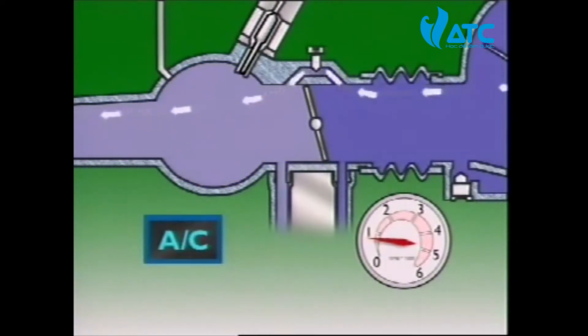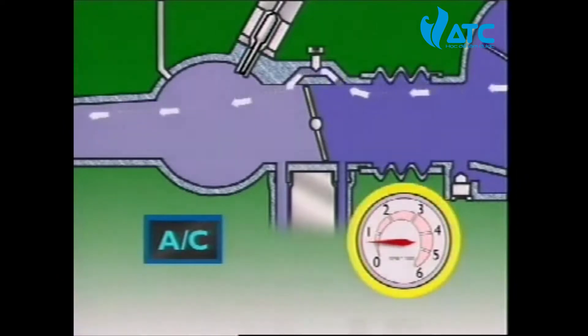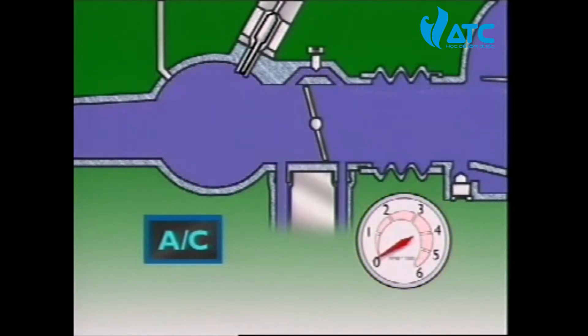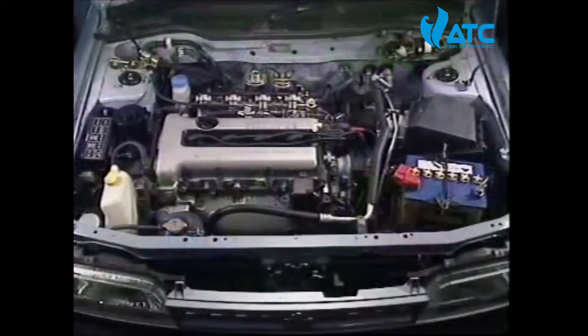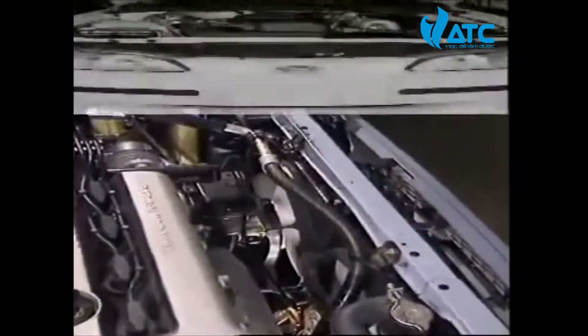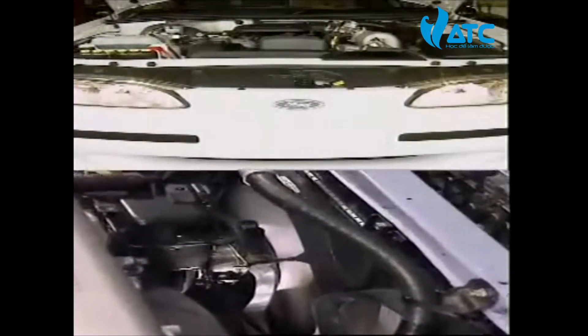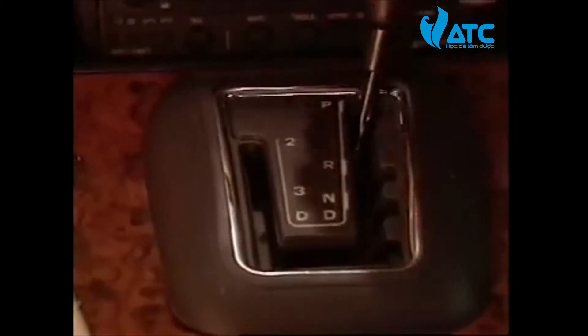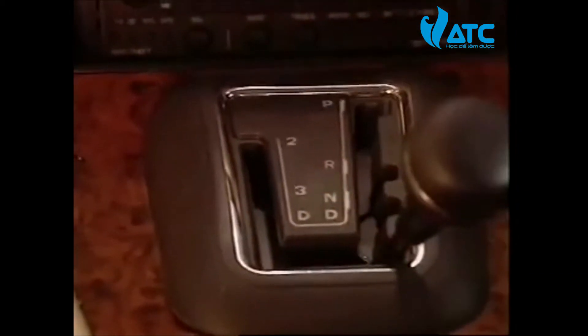However, if more load is put on the engine during idle, its idle speed may fall to a level where the engine stalls. Higher load can be caused by extra frictional resistance that occurs in a cold engine and by electrical loads from headlights or the cooling fan. Shifting an automatic transmission into a drive range or engaging the air conditioner compressor clutch will also cause a drop in the idle speed.